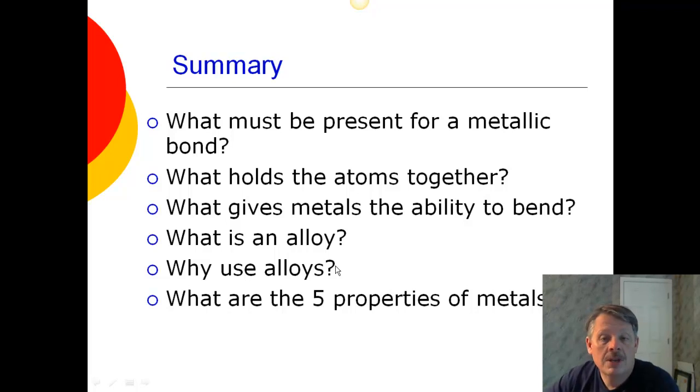You should know what an alloy is, that it's a mixture of metals, and why we use them, because the properties are different. And what are the five properties of metals when we talk about things like they're malleable, they're ductile, they have shine, luster, they conduct heat, they conduct electricity. That's what you need to know about the five properties of metals.